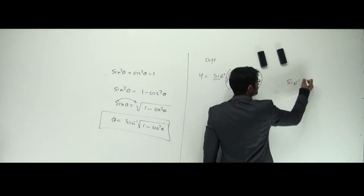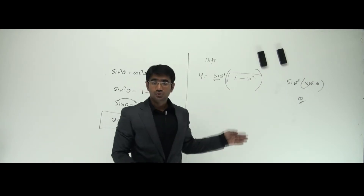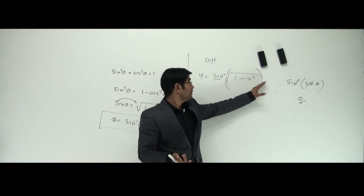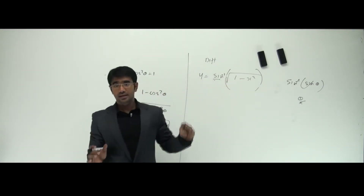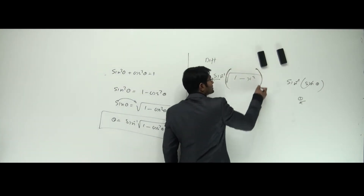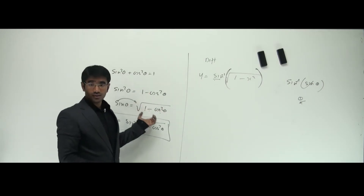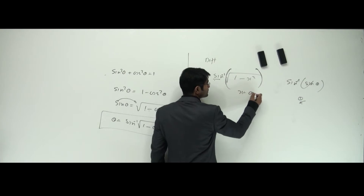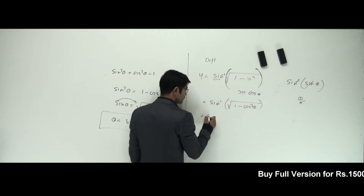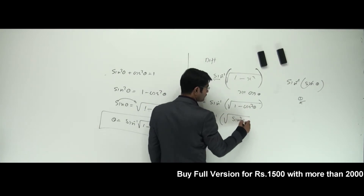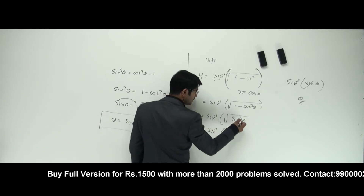If you have sine inverse of sine theta, you can cancel these two and the answer is theta. This is the main intention of substitution — whatever I'm substituting using trigonometry should give sine theta here so that sine theta and sine inverse cancel to give only theta. So if I come back to this formula, square root of one minus cos squared theta is sine theta. So if x equals cos theta, this becomes sine inverse of root of one minus cos squared theta, which is sine squared theta, and sine inverse of sine theta gives theta.